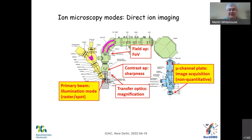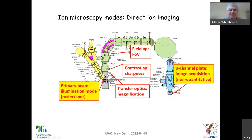There are other more quantitative detectors available. I believe Cameca has stopped selling the RAE, and a Japanese group under Yorimoto has developed a so-called SCAPS detector, which is a much more quantitative channel plate. In this mode, the transfer optics themselves determine magnification of the image, the contrast aperture determines sharpness, and we have a field aperture that determines how much of the sample we see.